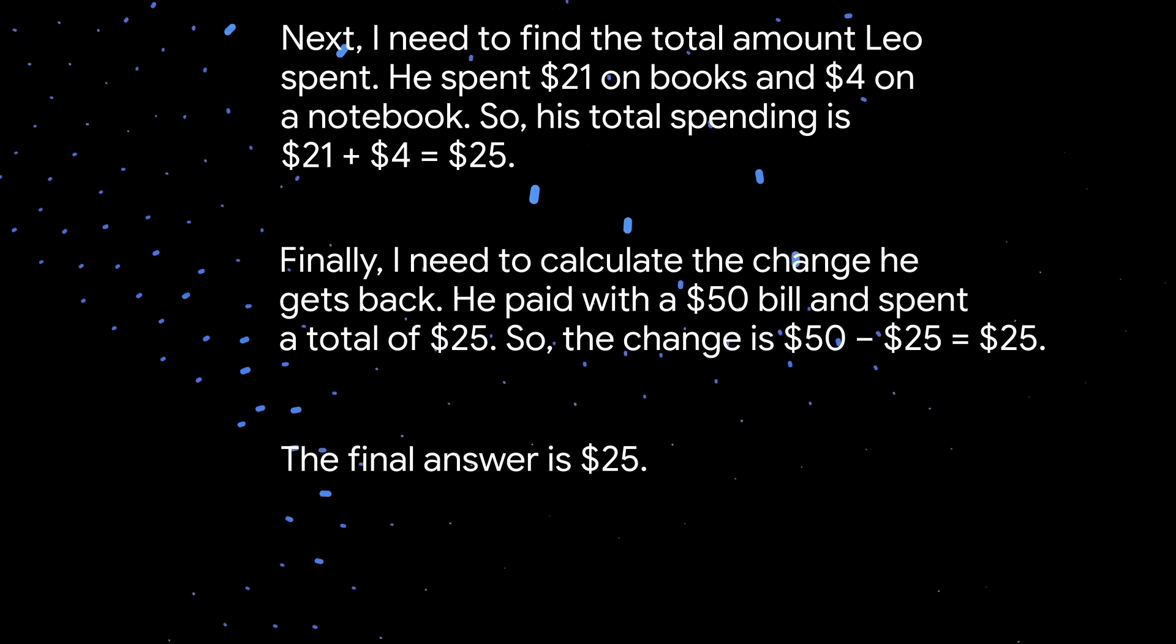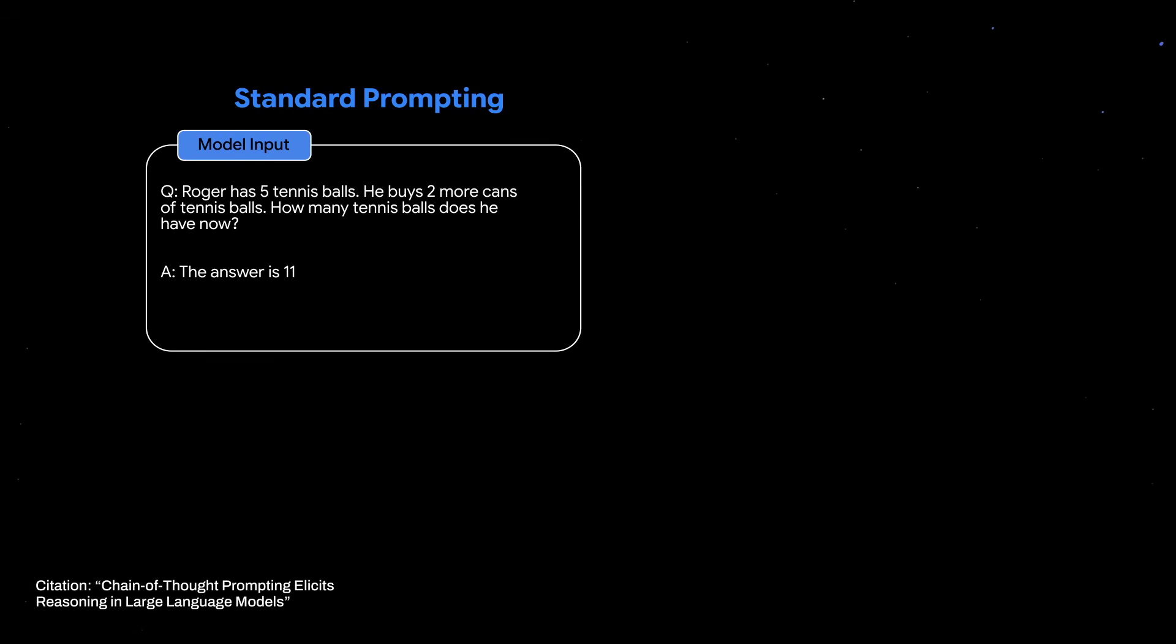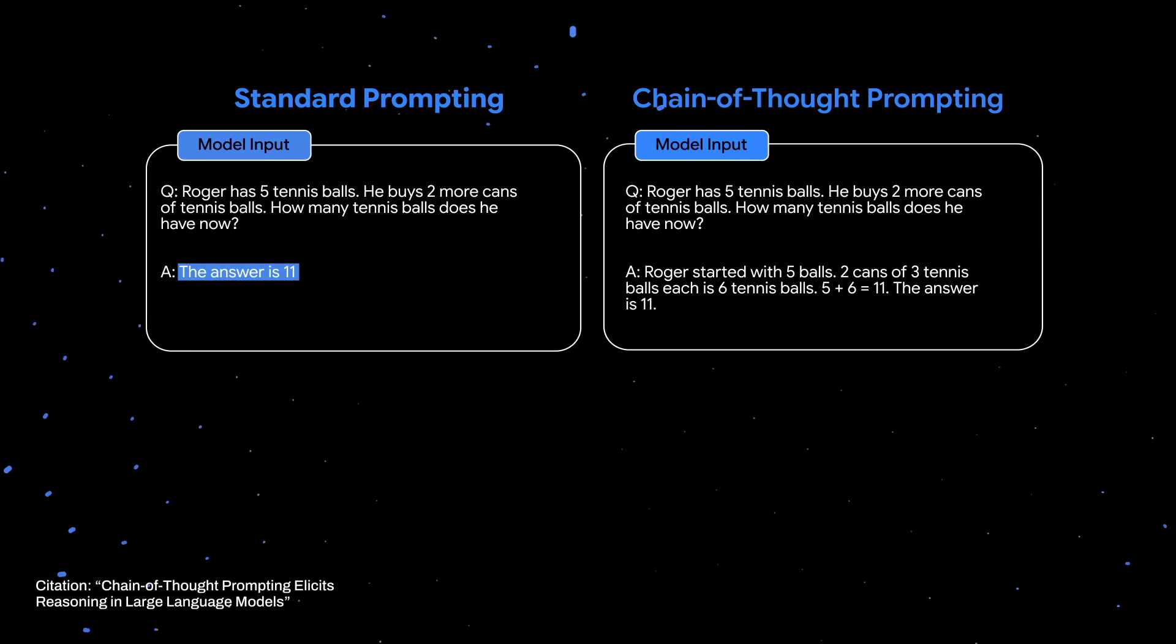Here's an example from the original paper. In the no chain of thought scenario, the model is given a few-shot prompt with a math question and the corresponding output. In the chain of thought scenario, the model is given the same math problem, but this time we modify the corresponding output to the math problem so that it contains the chain of thought steps, highlighted in blue, used to calculate the answer. So instead of just, the answer is 11, the model is provided with a series of intermediate calculations.